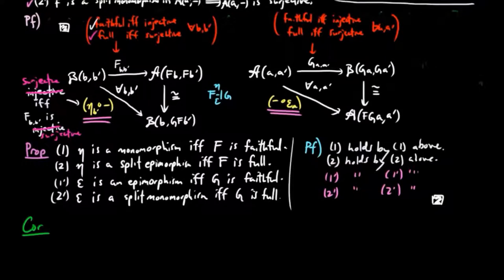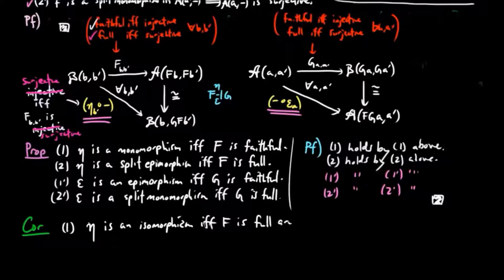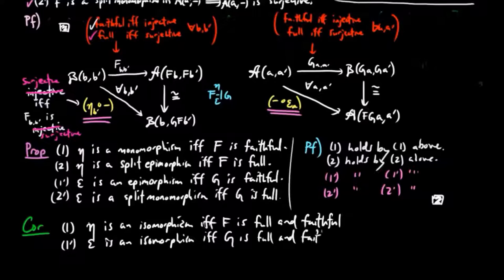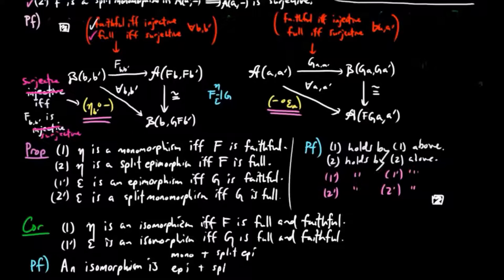Then as a corollary: (1) eta is an isomorphism if and only if F is full and faithful, and (1') epsilon is an isomorphism if and only if G is full and faithful. This follows from an isomorphism being equivalent to a morphism which is both a monomorphism and a split epimorphism, and an isomorphism also being equivalent to a morphism which is both an epimorphism and a split monomorphism.